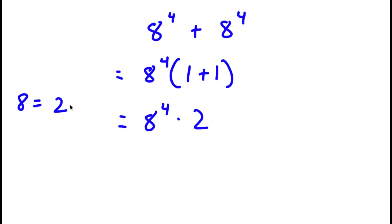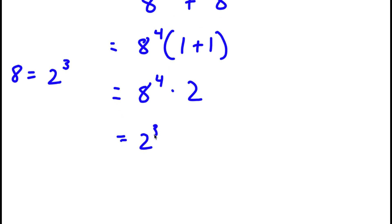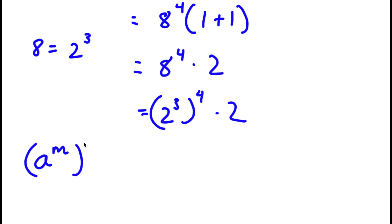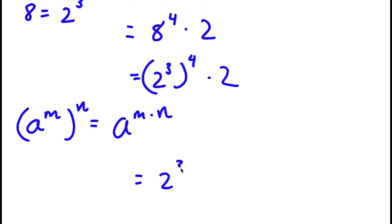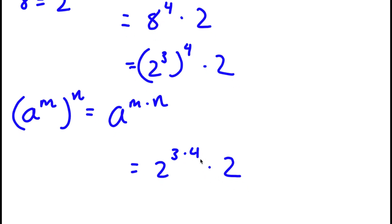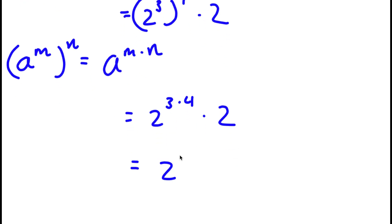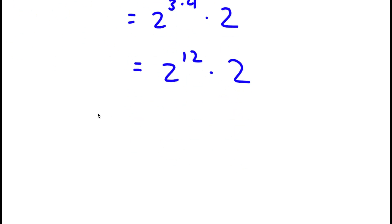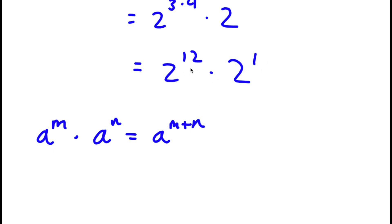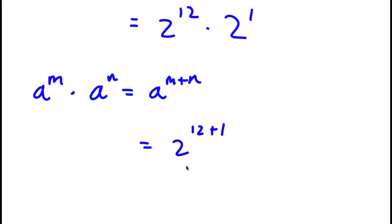Now 8 is the same thing as 2 to the power of 3. So replacing 8 with 2 to the power of 3, I get 2 to the power of 3 to the power of 4 times 2. Since a to the power of m to the power of n equals a to the power of m times n, I have 2 to the power of 3 times 4, which is 2 to the power of 12, times 2. And since 2 is 2 to the power of 1, I have 2 to the power of 12 times 2 to the power of 1, which equals 2 to the power of 13.